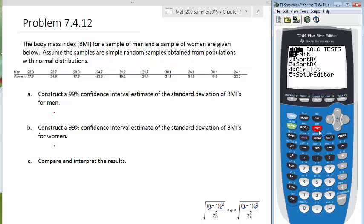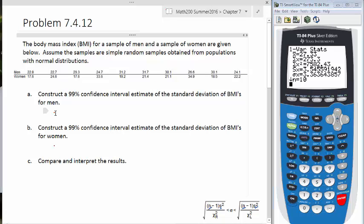If I press stat and edit, this will give me an opportunity to enter all my values. I've already done that for both the men and the women. I'm going to go to calc and then do a one-var stats on L1. I'm going to focus my attention on the Sx. So, 3.55, let's call it. For the men, we have n is equal to 10, and we have our standard deviation S equal to 3.55.